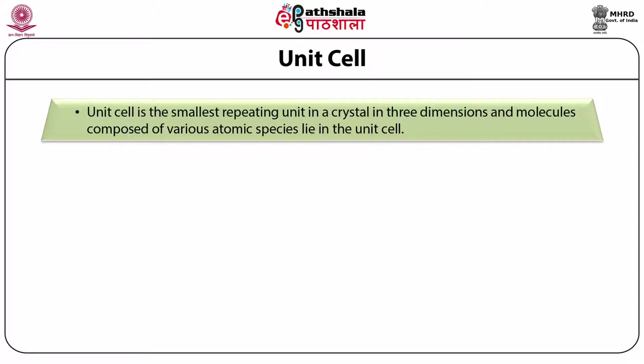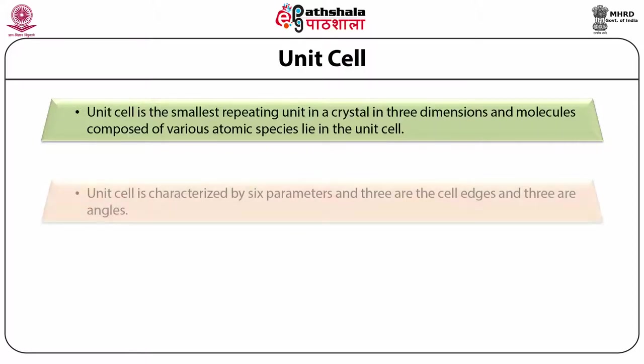Like a matchbox having three axes — length, breadth and width — the unit cell is also characterized by six parameters: three cell edges conventionally called a, b, c along x, y and z directions respectively, and three angles called alpha, beta and gamma. Alpha is the angle opposite to the a axis, beta is opposite to b, and gamma is opposite to c.